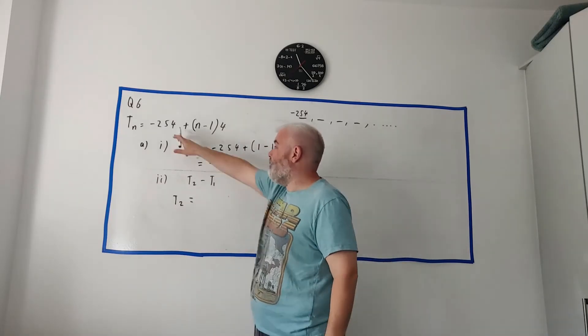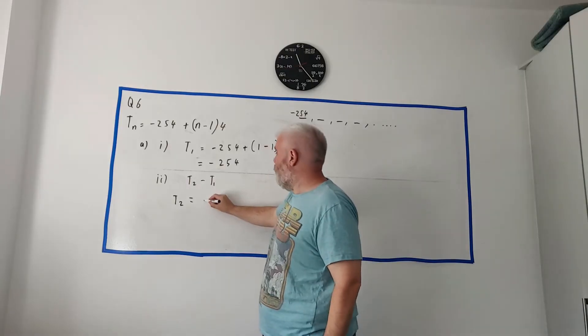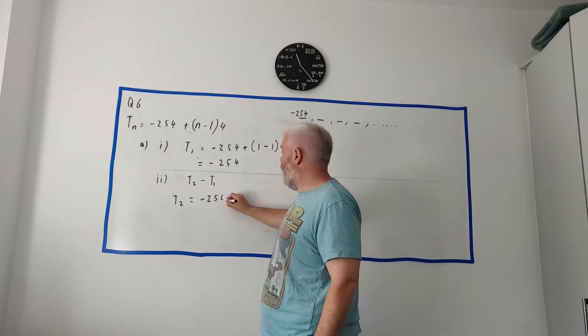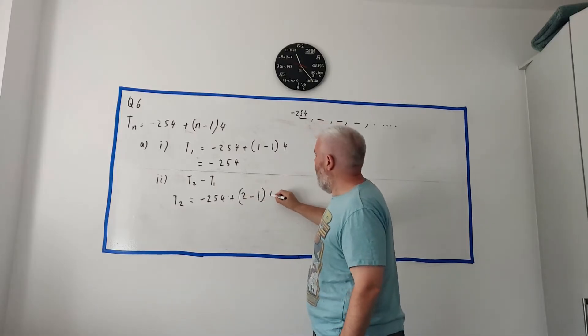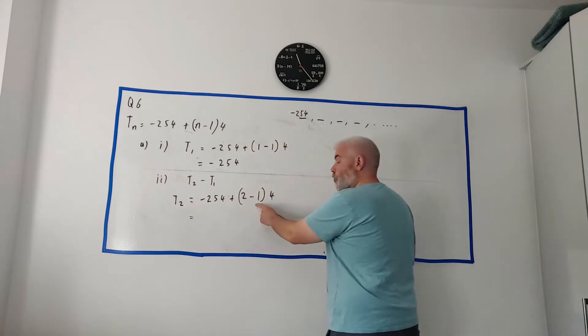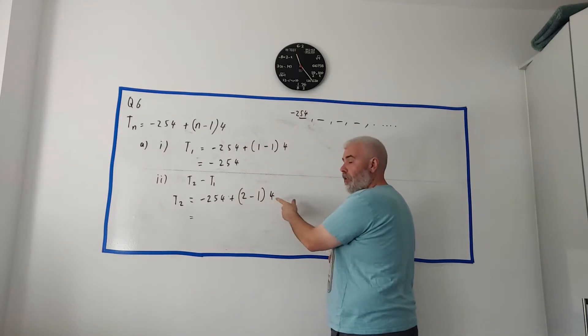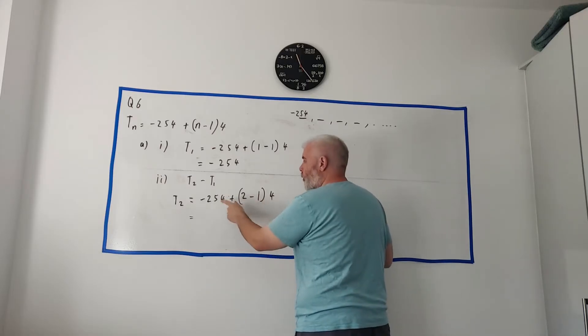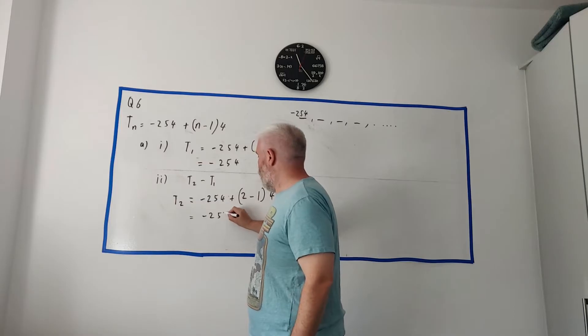And we get T2, we'll just find T2 because we know T1 already. T2 is the same as we just did up here. Everywhere I see an N, I'm going to write a 2. Minus 254 plus, instead of the N, I'm writing a 2. And that's it. And we clean this up a bit. 2 minus 1 is 1. 1 multiplied by 4 is 4. 4 minus 254 is minus 250.